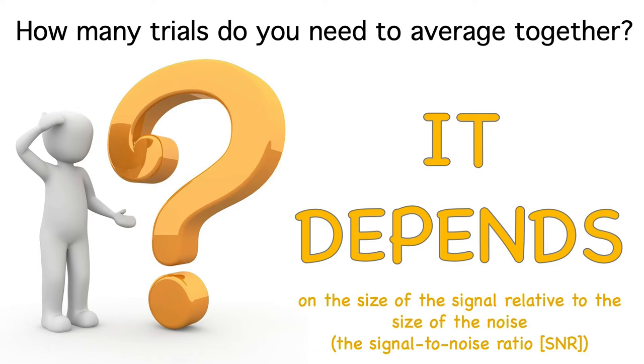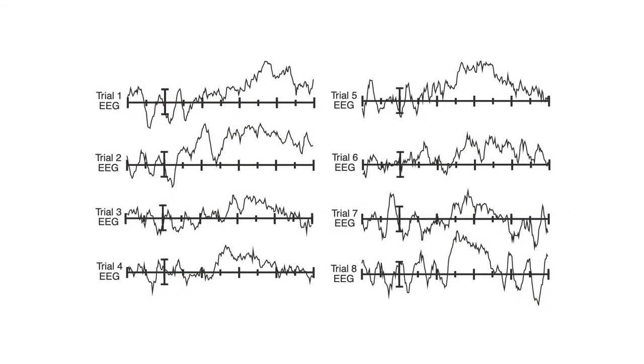Depending on the experiment, we might need 10 trials or we might need 1,000 trials to get an acceptable signal-to-noise ratio. Here's an example where we have only 8 trials, which isn't even close to enough in most experiments.